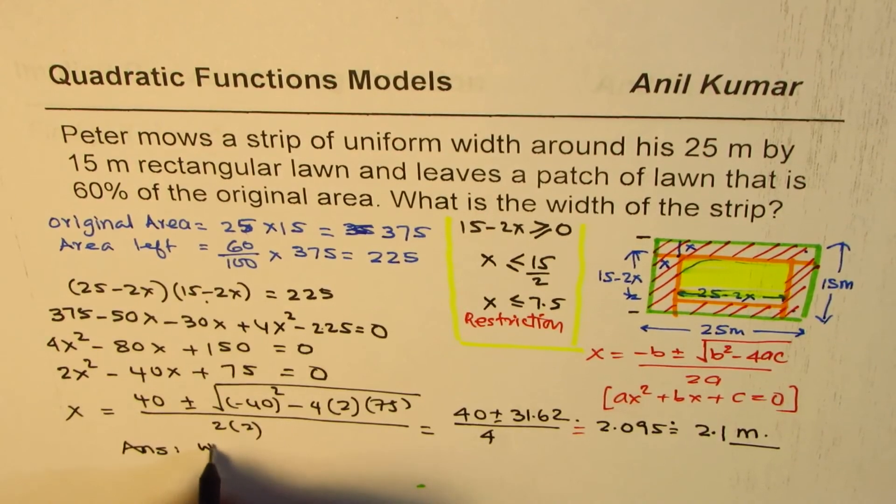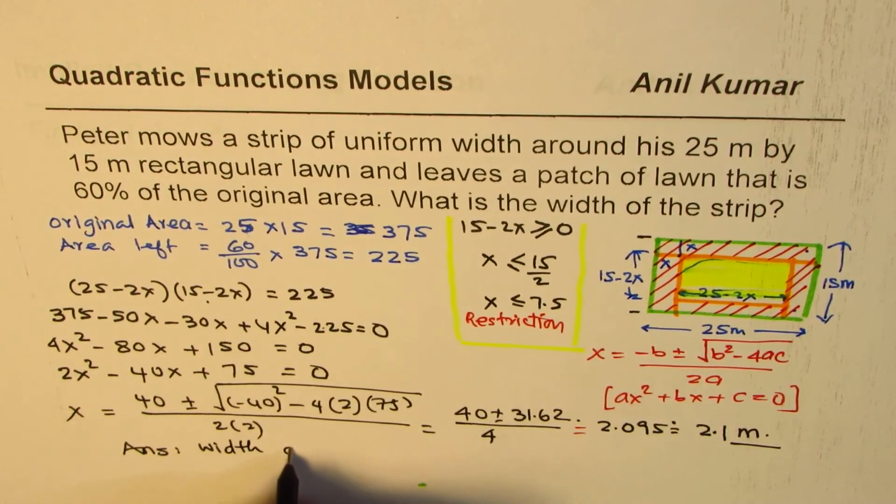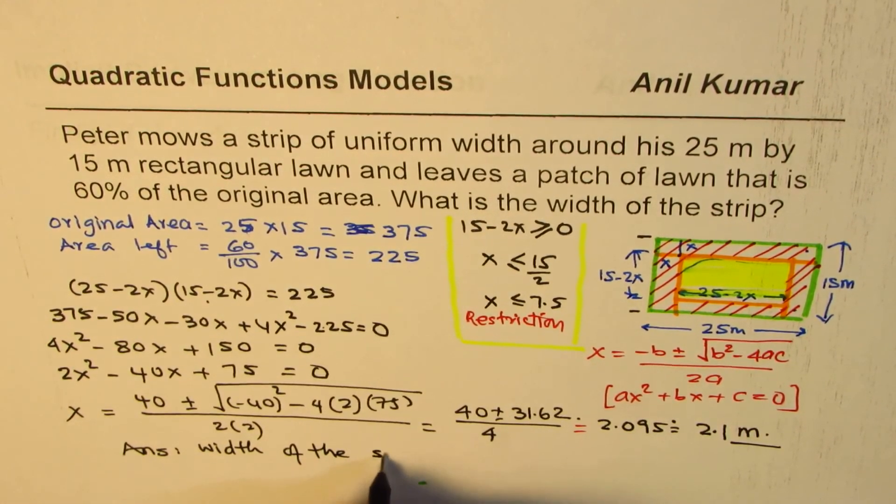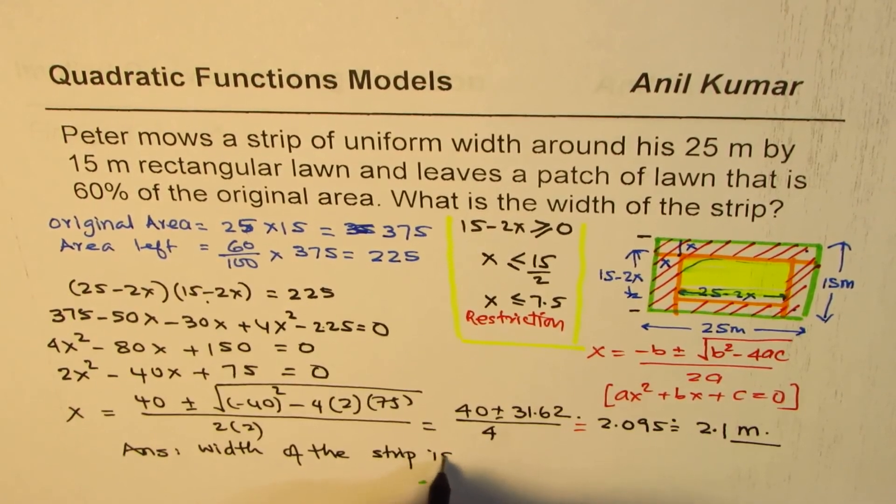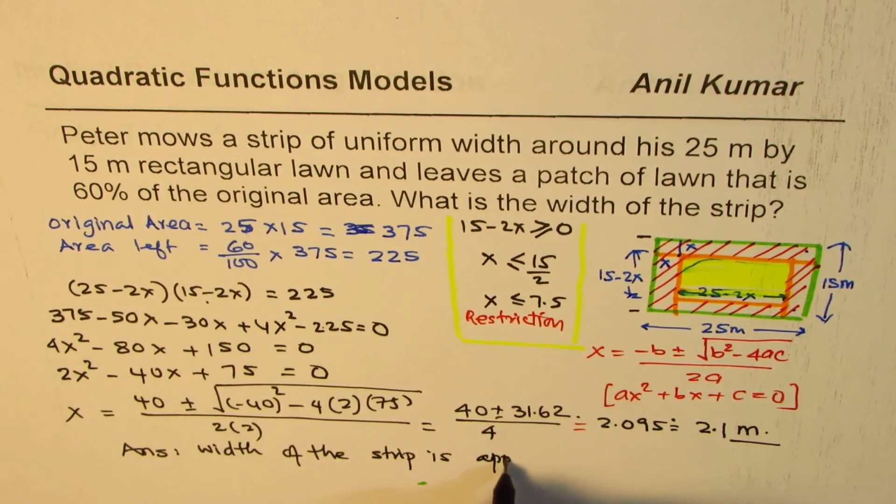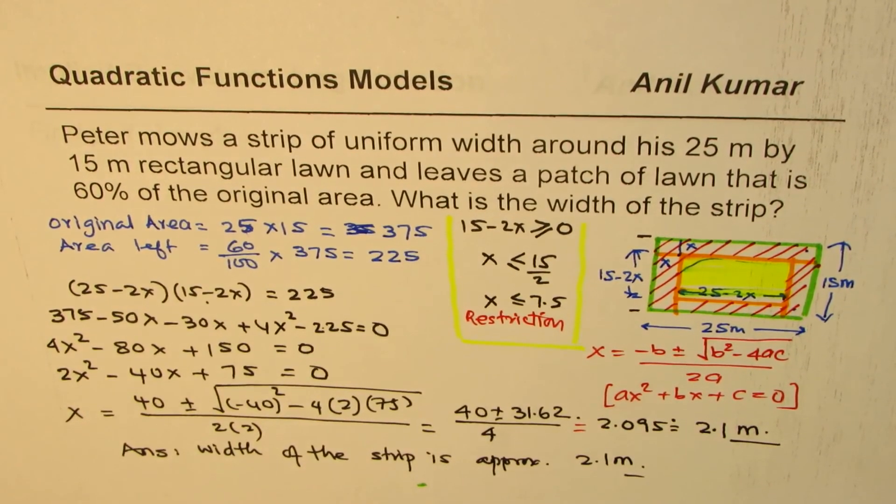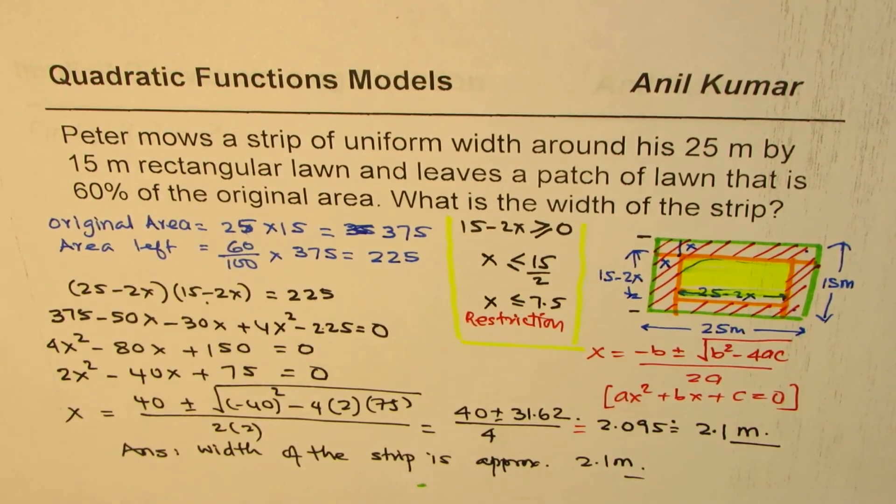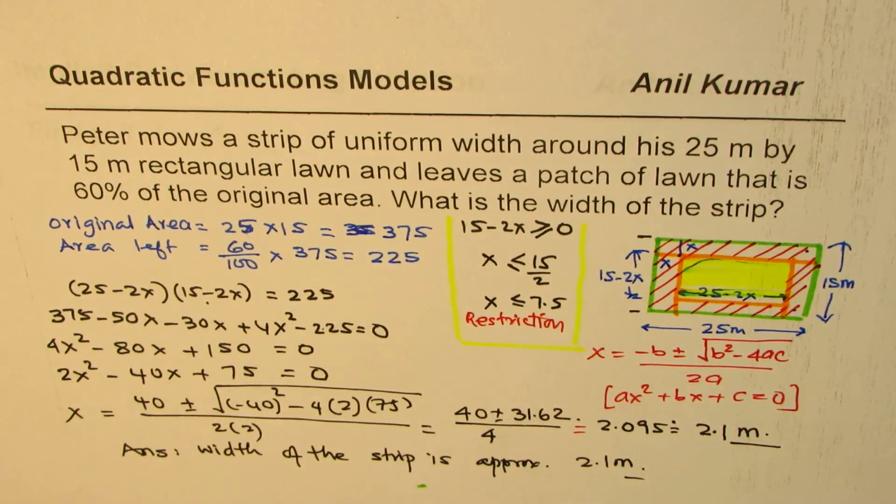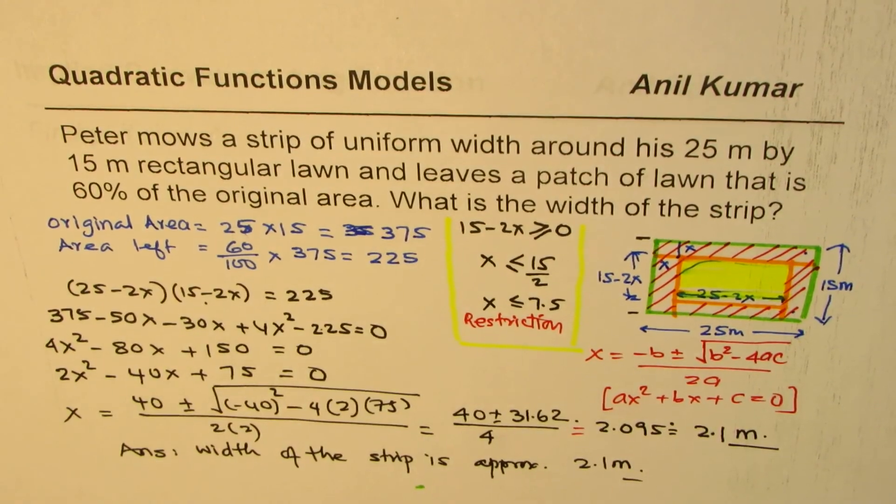Now we can write down the answer. Width of the strip is approximately 2.1 meters. So that is how you could actually solve such a question. It is very important to understand, and the restriction here is that x has to be less than or equal to 7.5 meters. I'm Anil Kumar and I hope that helps. Thank you and all the best.